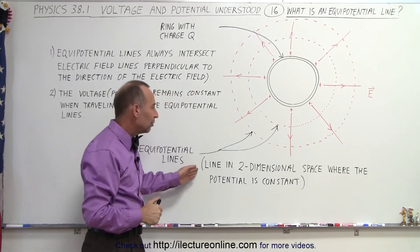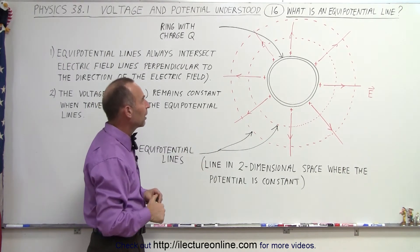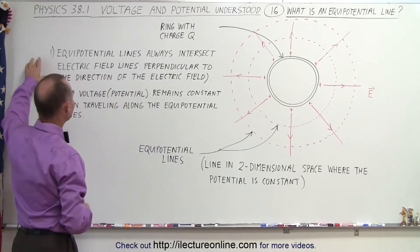So this is a line in two-dimensional space where the potential is constant. That's basically the definition of the equipotential line, and there's two things we should take note of.